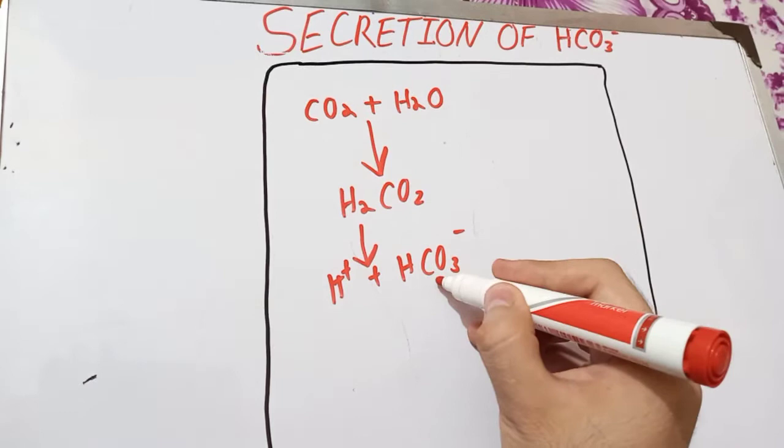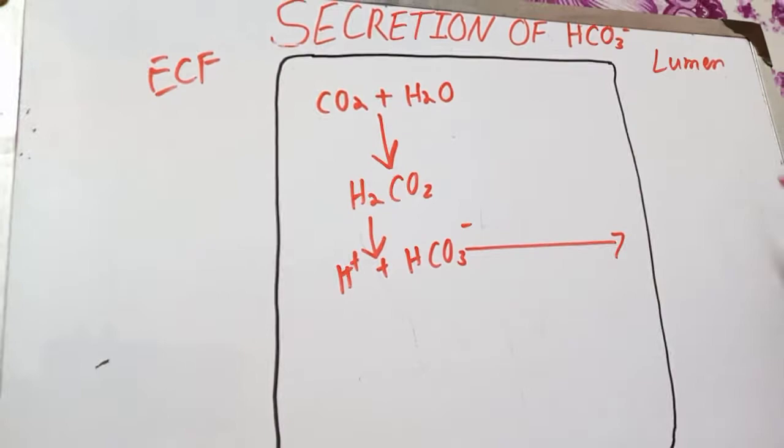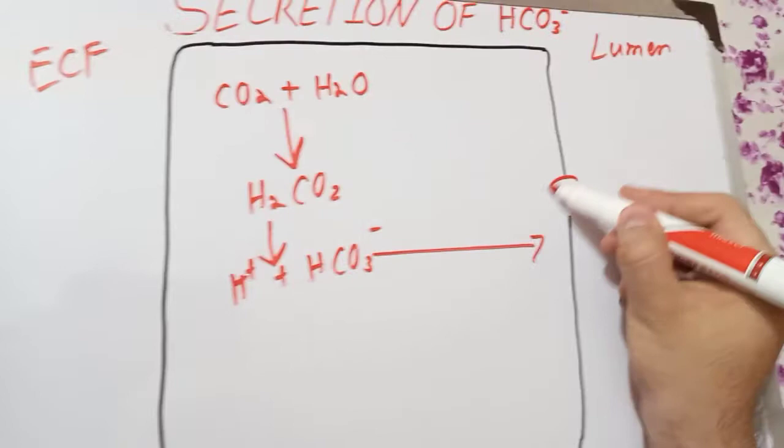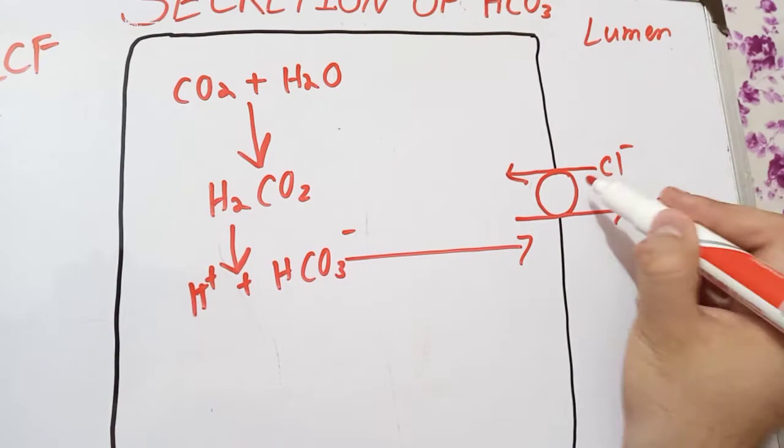These bicarbonate ions will move toward the luminal side. This is the luminal side and this is the extracellular fluid side. They will move toward the luminal side and encounter a transporter which will transport them out of the cell in exchange for chloride ions. Bicarbonate ions will be moved out of the cell and chloride ions will be moved inside the cells.